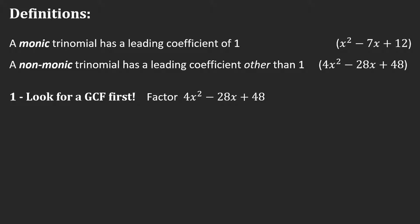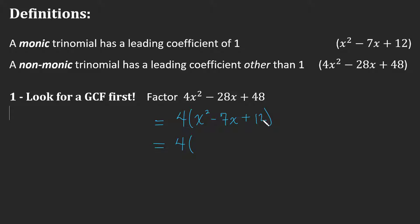A monic trinomial has a leading coefficient of 1, and a non-monic trinomial has a coefficient that's not 1. The first thing you always want to do is look for a GCF — your life would be so much easier if you can take one out. In this example, we can factor out a 4 from all three terms, leaving us with a monic trinomial. Then using product and sum, the two numbers that multiply to 12 and add to negative 7 are negative 3 and negative 4, and that's the factorization.